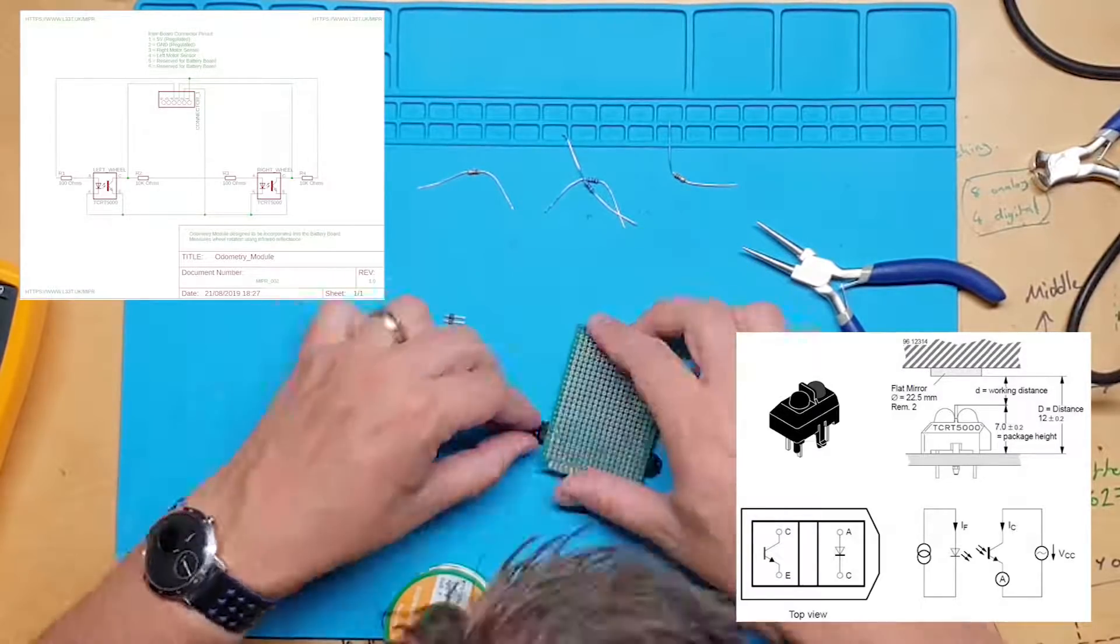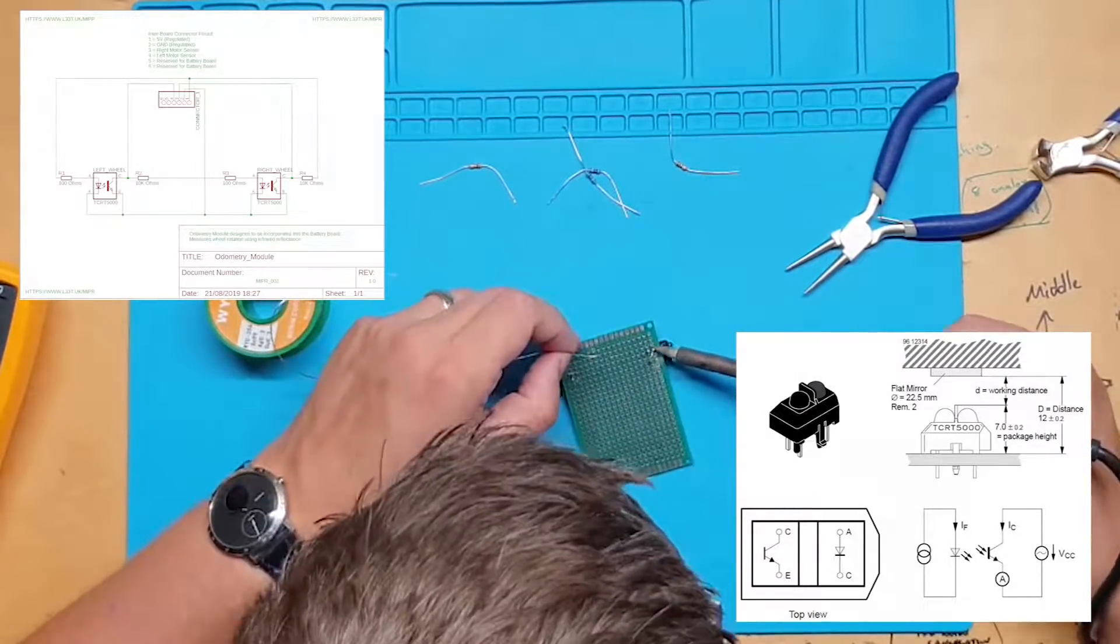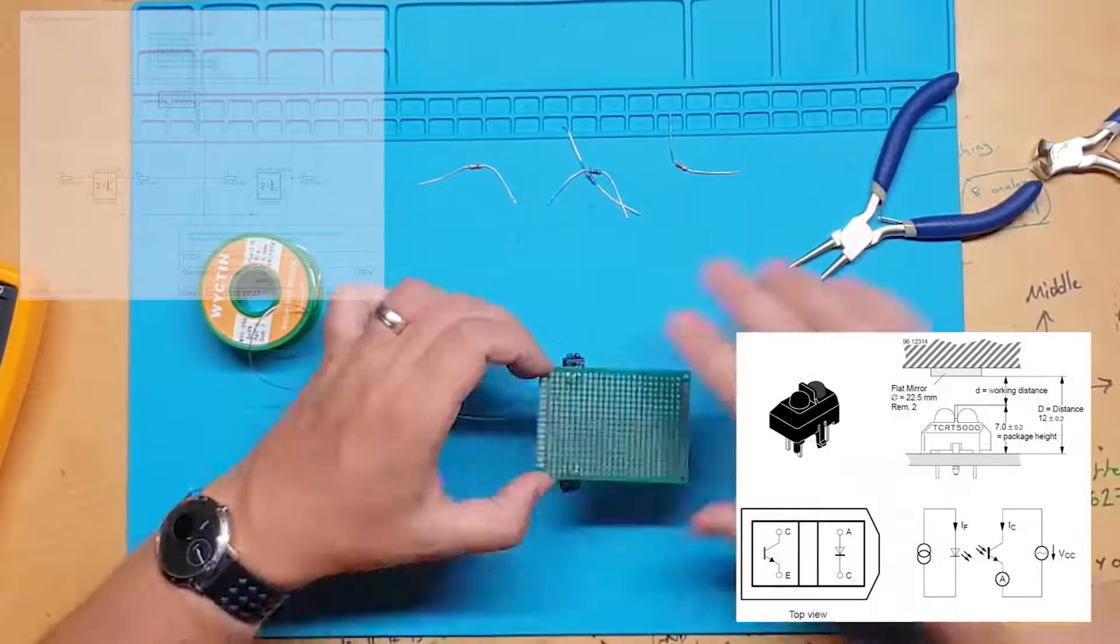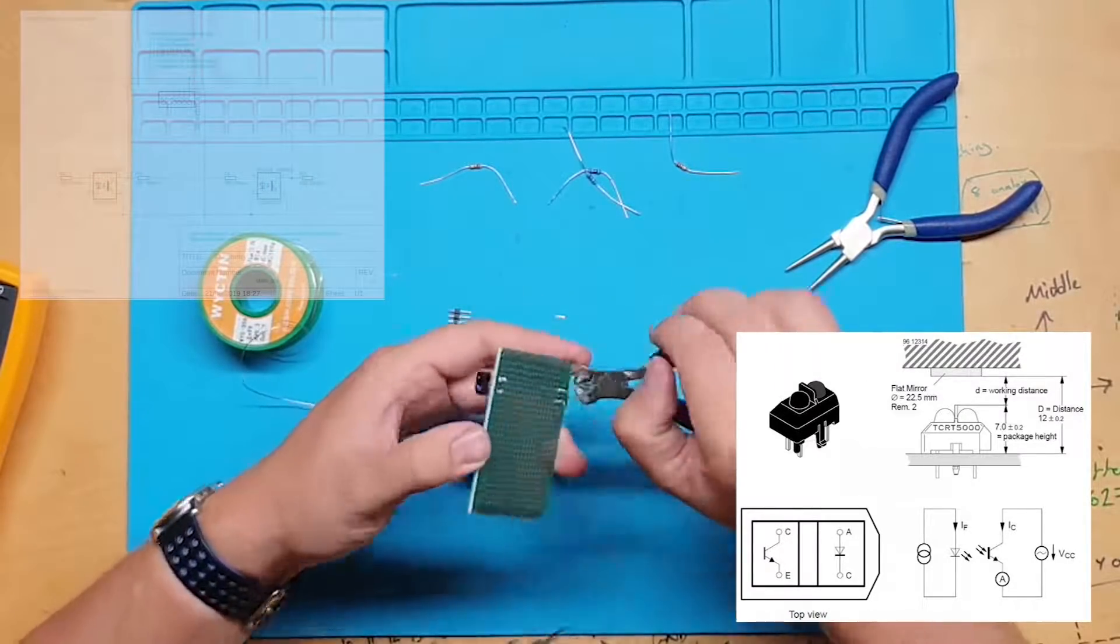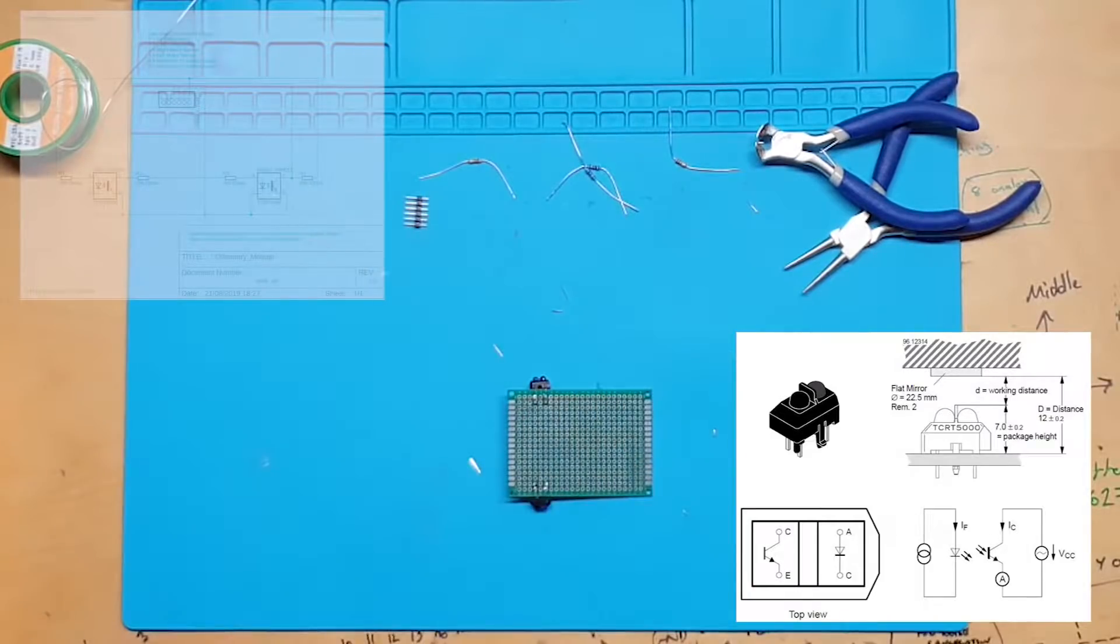I have mounted the sensors aligned with the edge of the perf board for reasons so it looks neater. I'm carrying out a diode test here to ensure that the diodes are working and that I have mounted them the correct way.